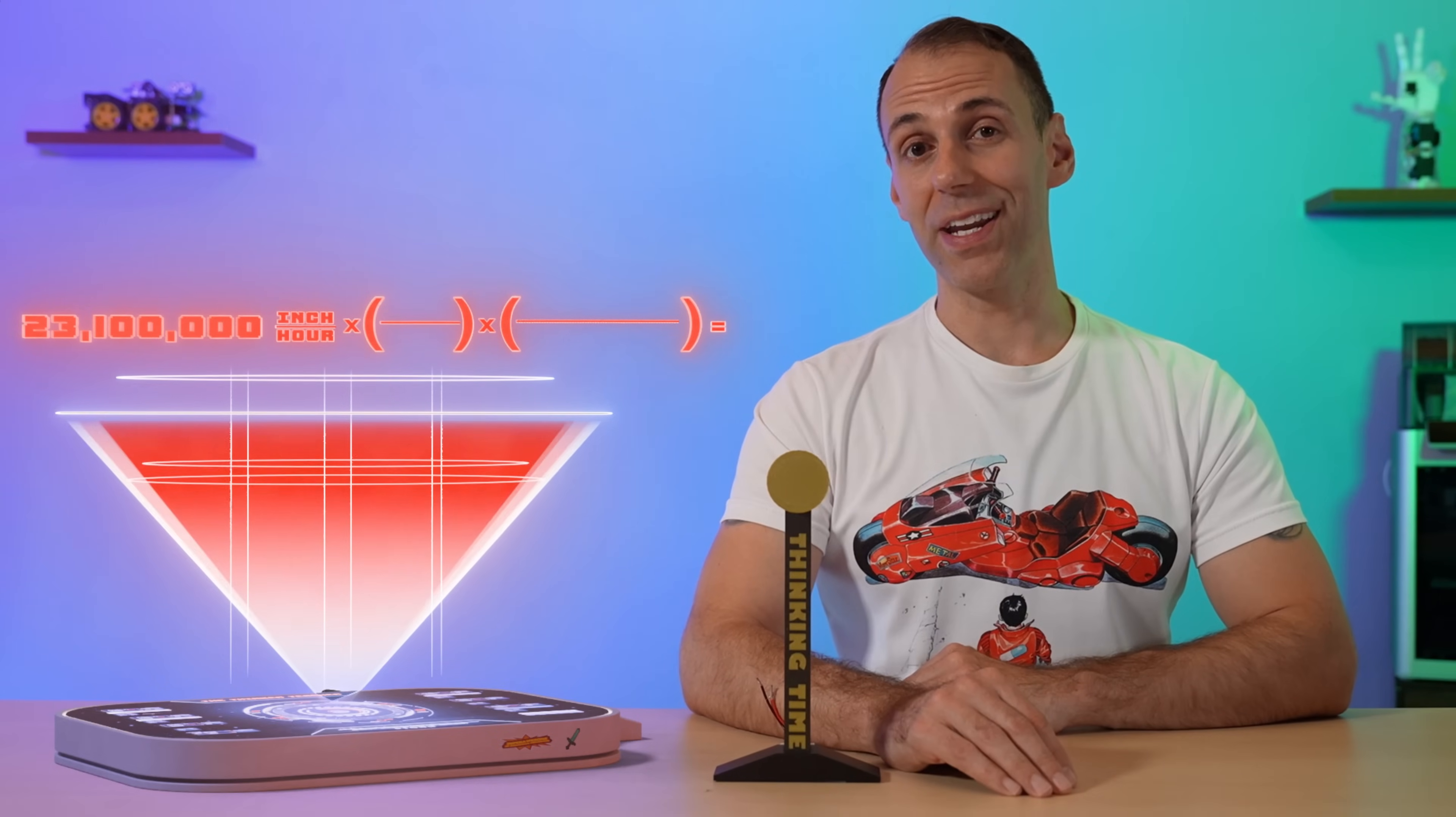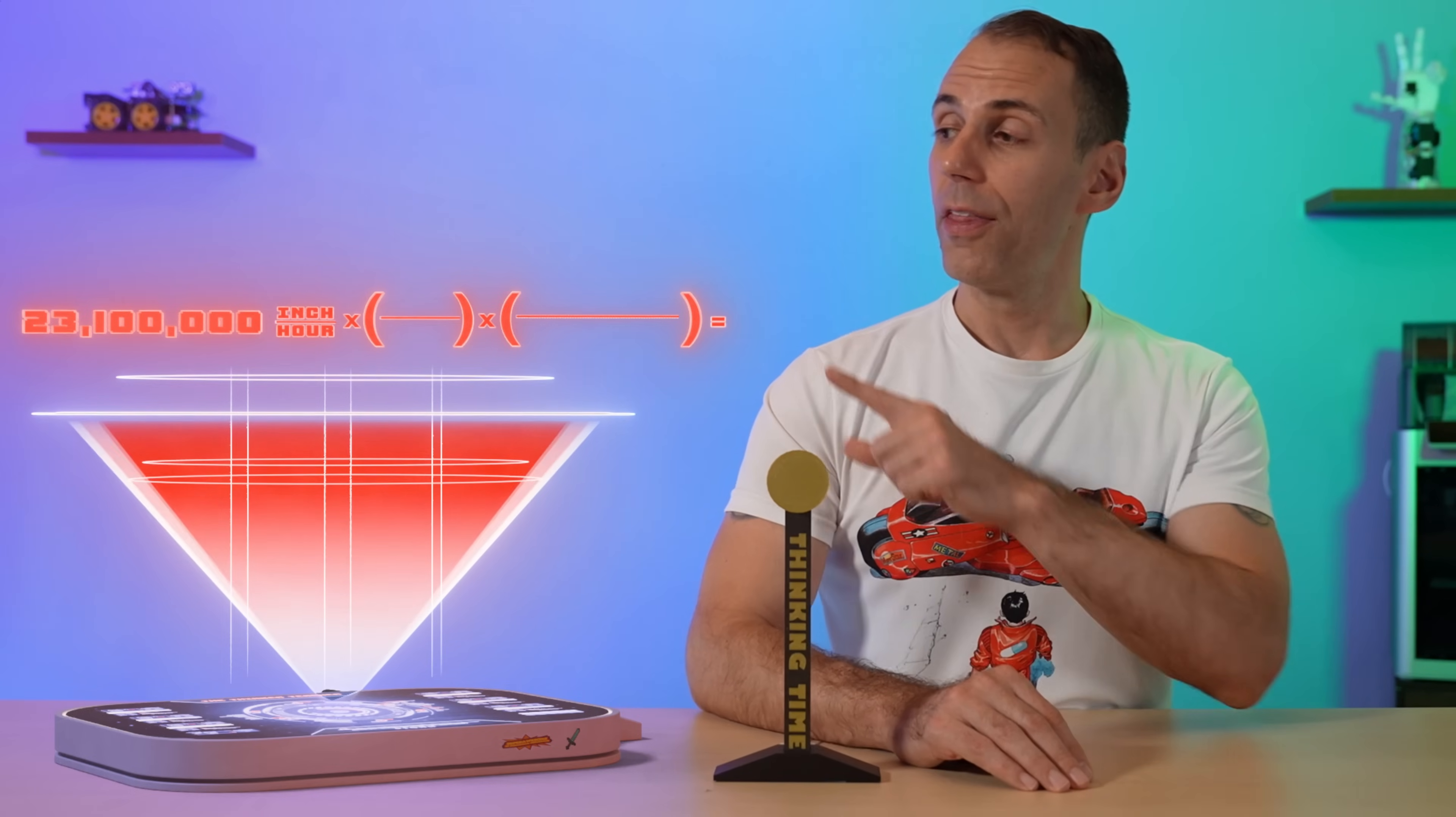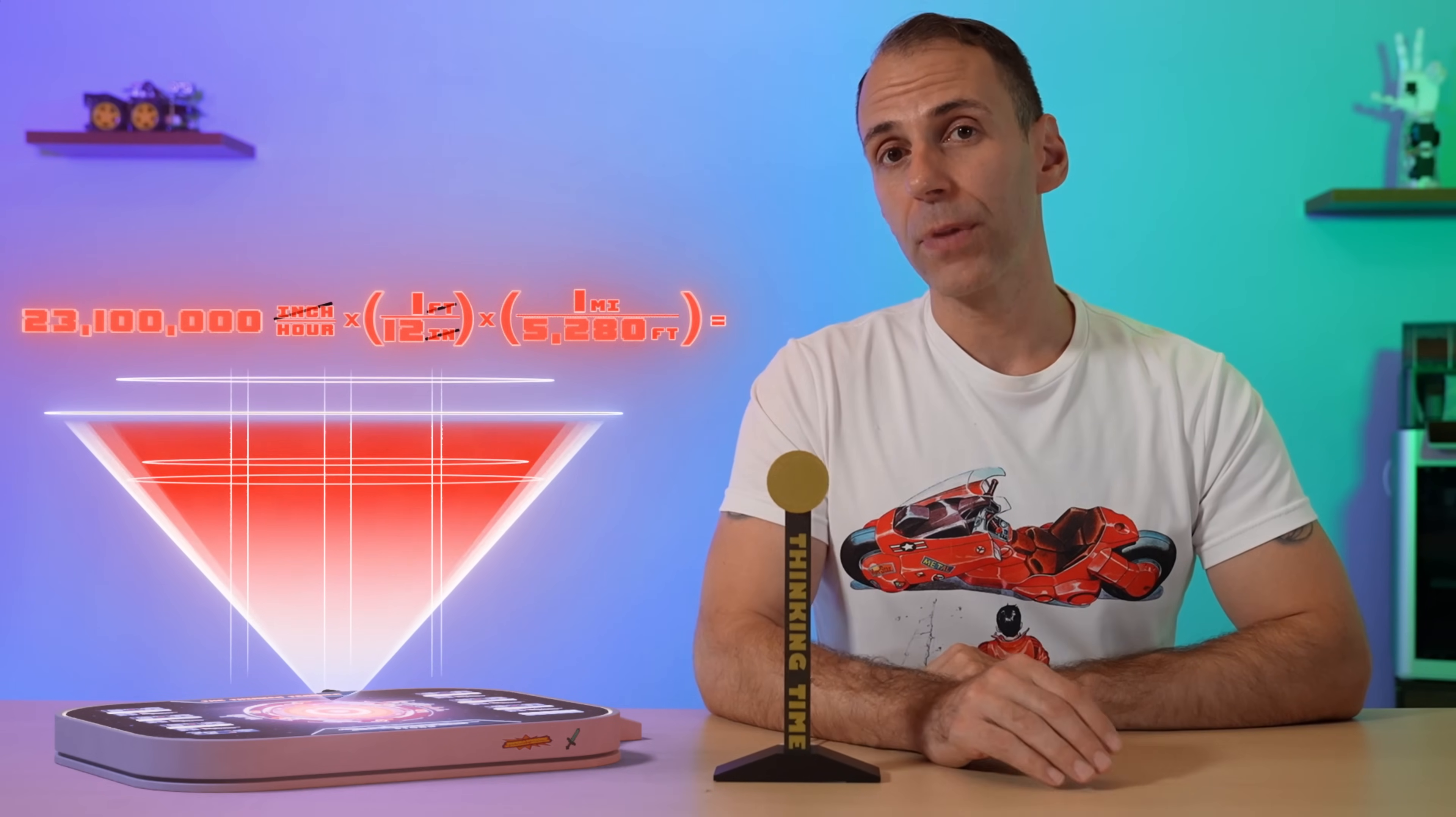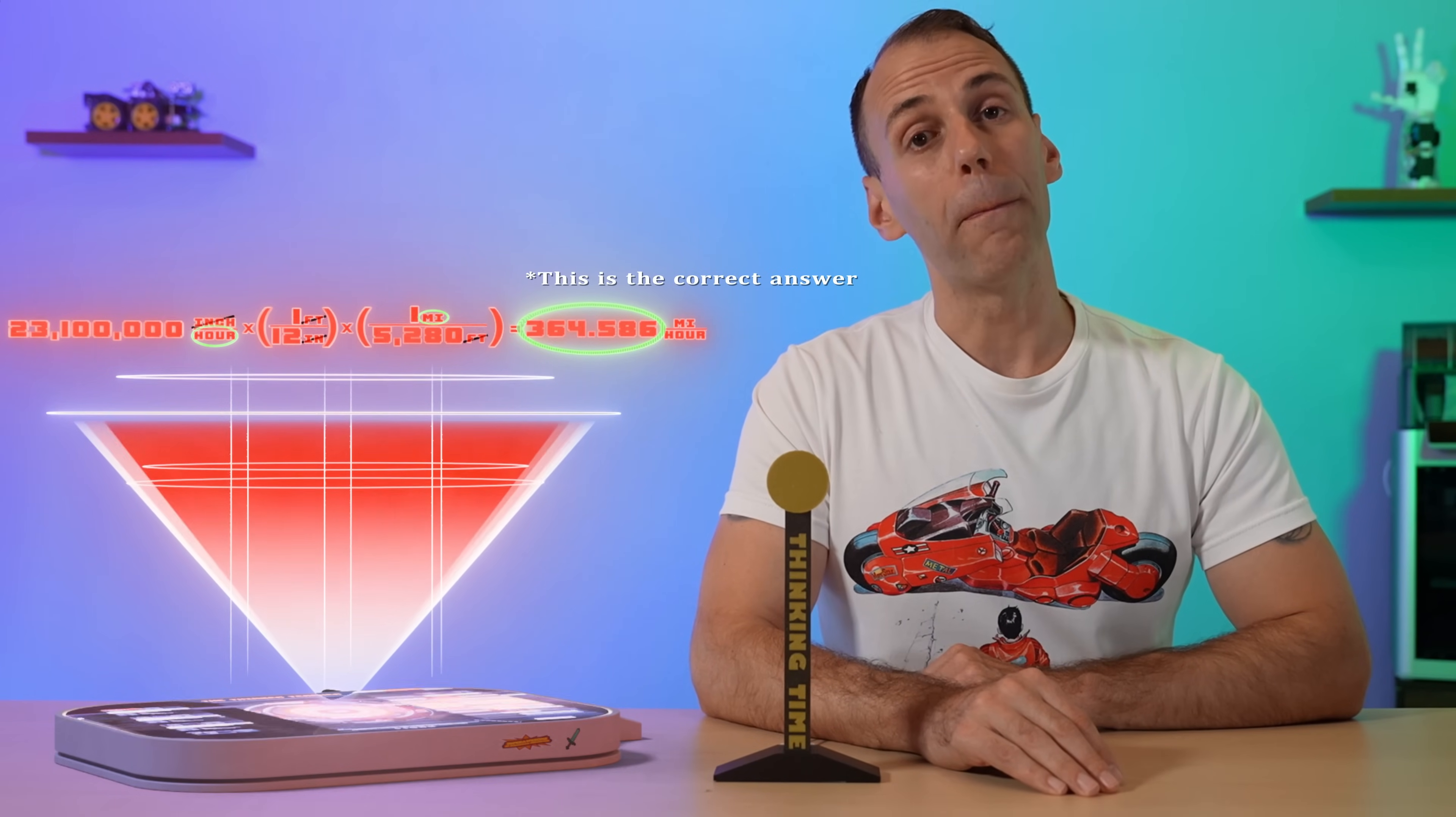Now, no one measures their speed in inches per hour, so let's convert that to something more practical. There are 12 inches in one foot, and 5,280 feet in one mile. If we divide that through, we get that the linear speed of these wheels is approximately 331 miles per hour.